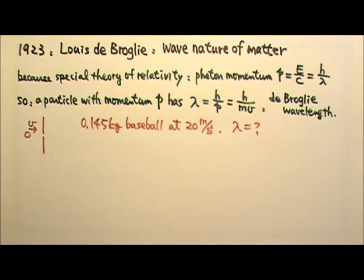Let's try this calculation. A 0.145 kg baseball travels at 20 meters per second. Find the wavelength of this baseball.